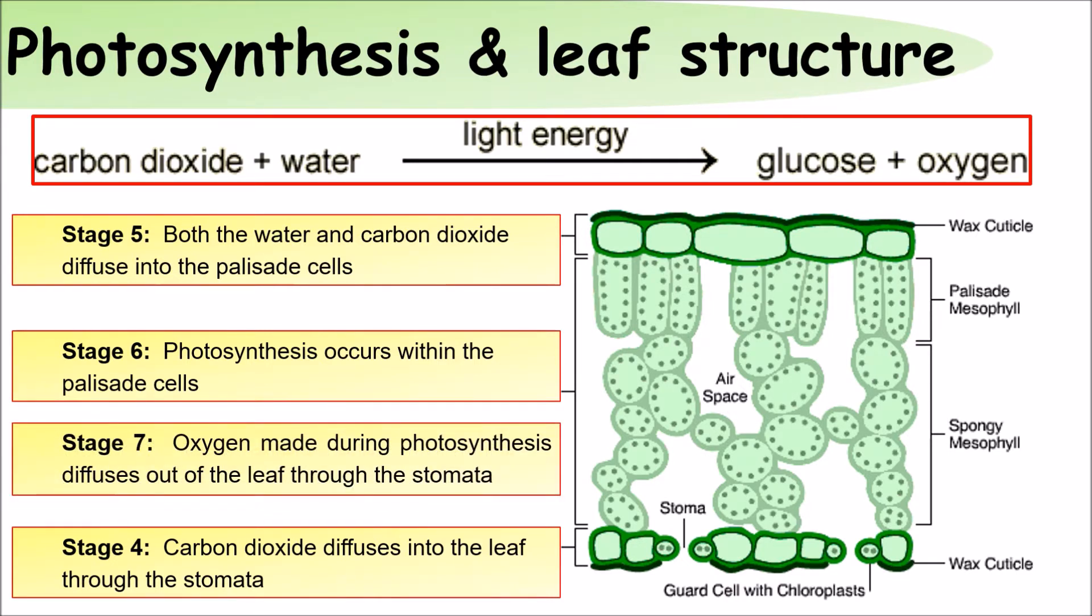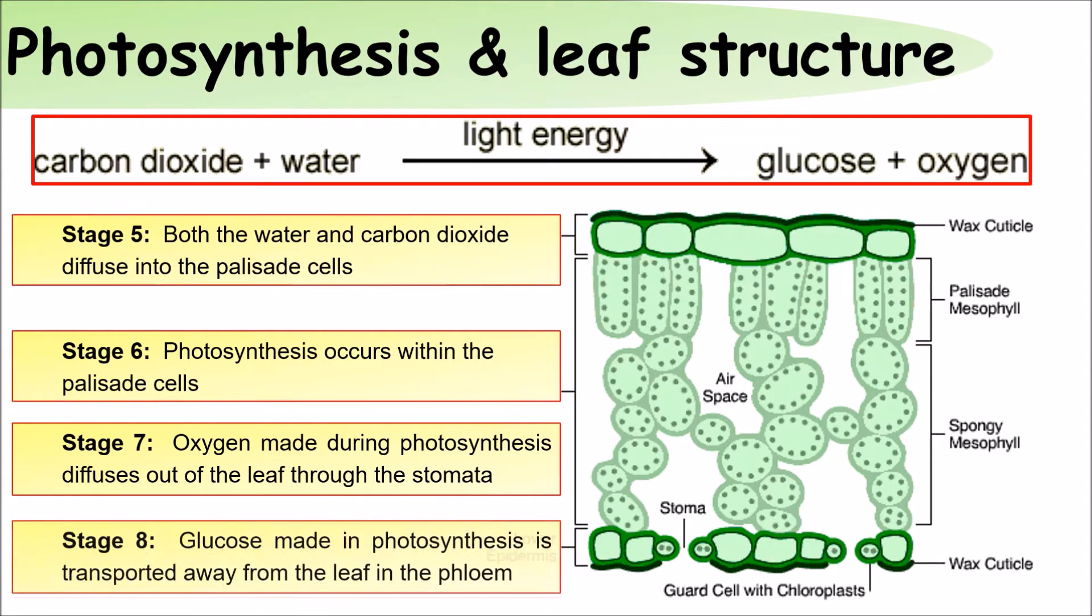Oxygen is made during photosynthesis and diffuses out through the stomata. Glucose made in photosynthesis is transported away from the leaf to the rest of the plant through the phloem.